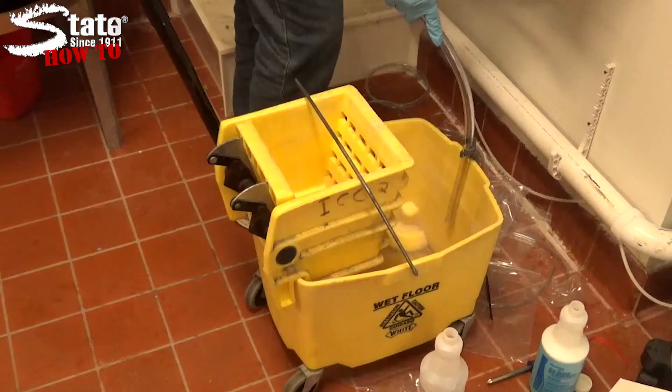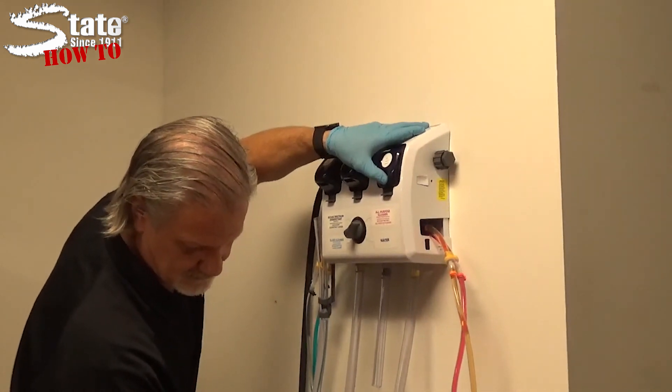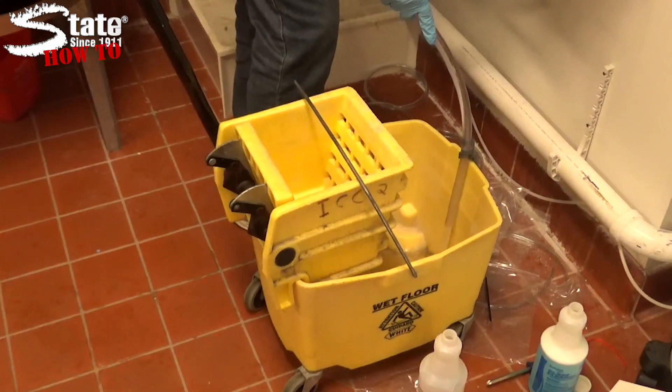For a mop bucket fill, unhook either long bucket fill hose and set it into the bucket. Hold the button on the side corresponding to the hose used until you have filled your bucket to the desired amount.